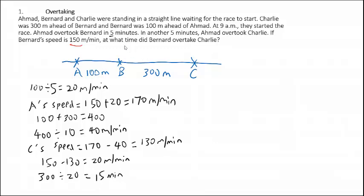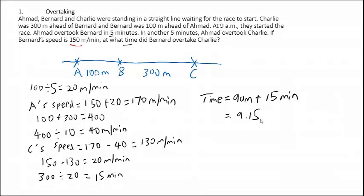The question asks for the actual time. This 15 minutes is counted from 9am — the time the race started — not from 9:05. So to find the time, we take 9am plus 15 minutes, giving us the answer: 9:15am. This is the time at which Bernard overtook Charlie.